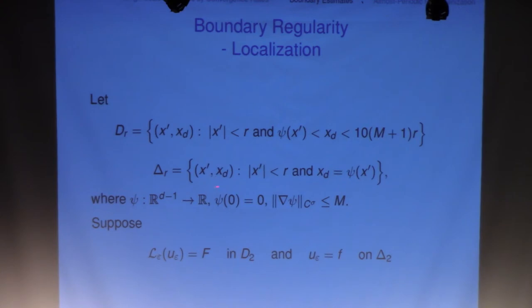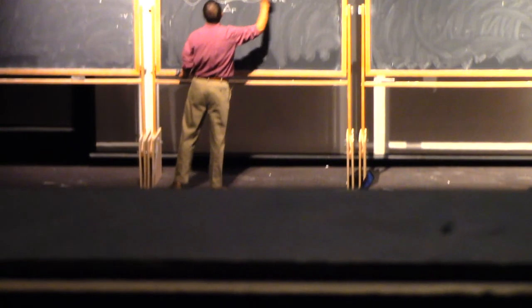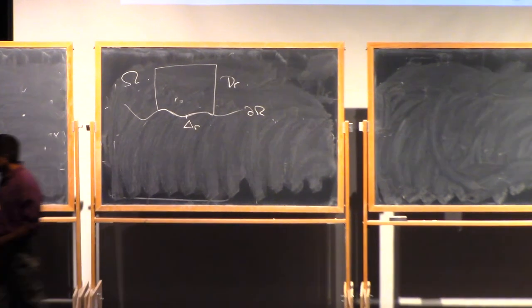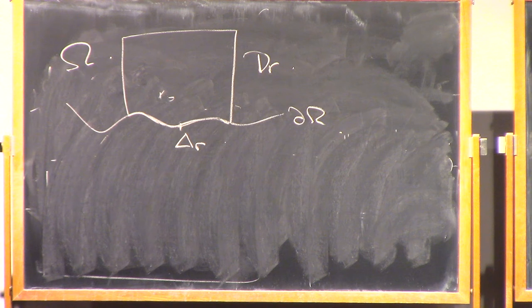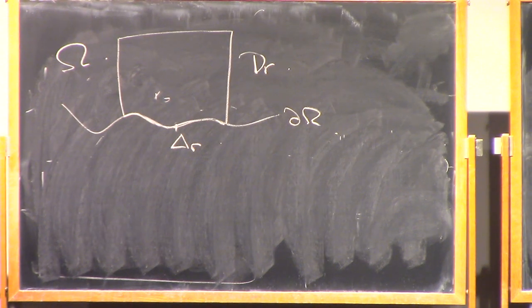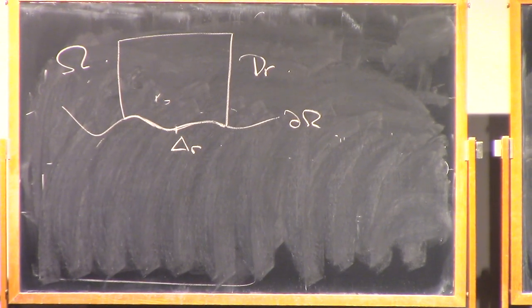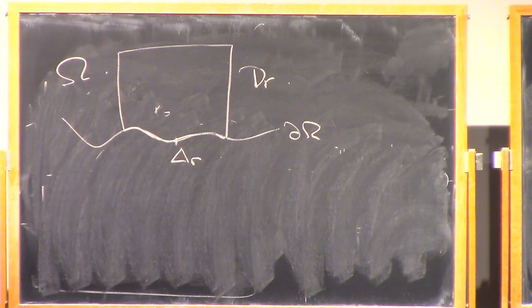I can have phi of 0 equal to 0, but I cannot insist the gradient of psi is also 0. So it's your boundary data, your fixed boundary here, and you somehow looking at this is your dr and the boundary, this part will be called delta r. This is the boundary of omega here.